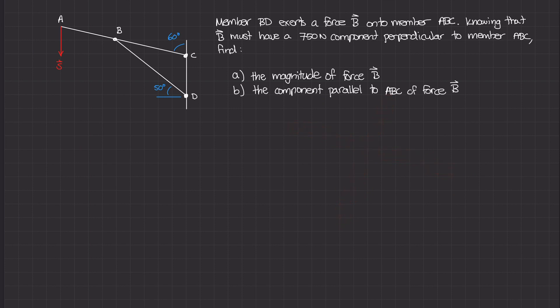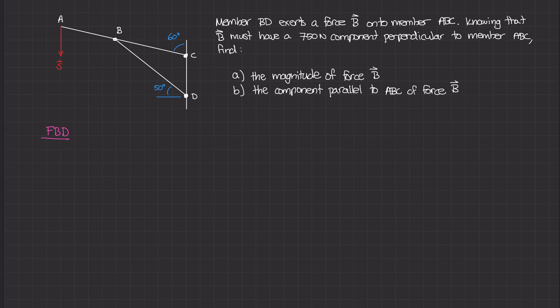Let's start one piece at a time. The first thing is to draw the free body diagram focused on the axis of ABC. If the line of action for ABC runs at 60 degrees from vertical, I can draw that axis through points A, B, and C. This axis represents the line of action through the member, not the member itself.